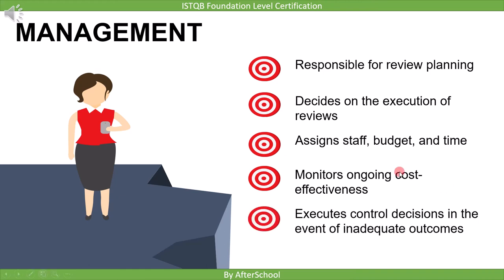The last management responsibility is that it executes control decisions in the event of inadequate outcomes. This is similar to a monitoring and control activity — management monitors the review process and, if required, allocates more resources or provides more time to complete the review process on time. To summarize management responsibilities: responsible for review planning, decides on the execution of reviews, assigns staff budget and time, monitors ongoing cost effectiveness, and executes control decisions in the event of inadequate outcomes.